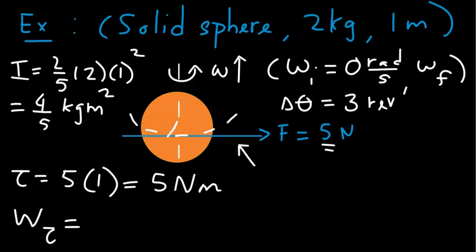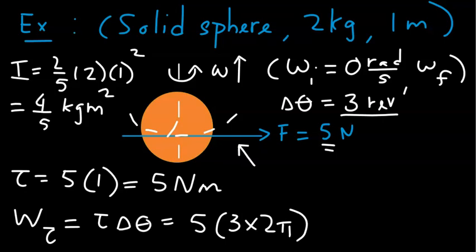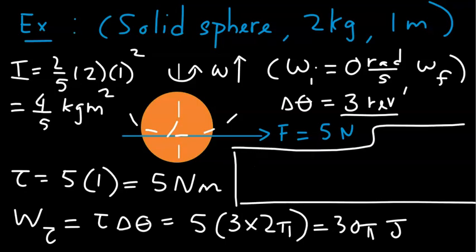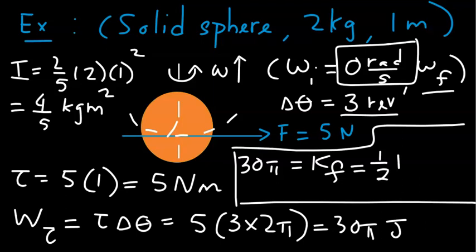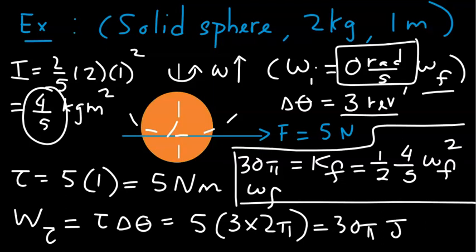The work done by this torque is torque times the angular displacement. The torque is 5 N·m, and the angular displacement is 3 revolutions, which is 3 times 2π radians, giving 30π joules of work. To find the final angular speed, we use the work-kinetic energy theorem: 30π joules equals the change in kinetic energy. The initial kinetic energy is zero since the system starts from rest. The final kinetic energy is half times the moment of inertia (4/5) times omega F squared. Solving gives a final angular speed of 15.35 radians per second.